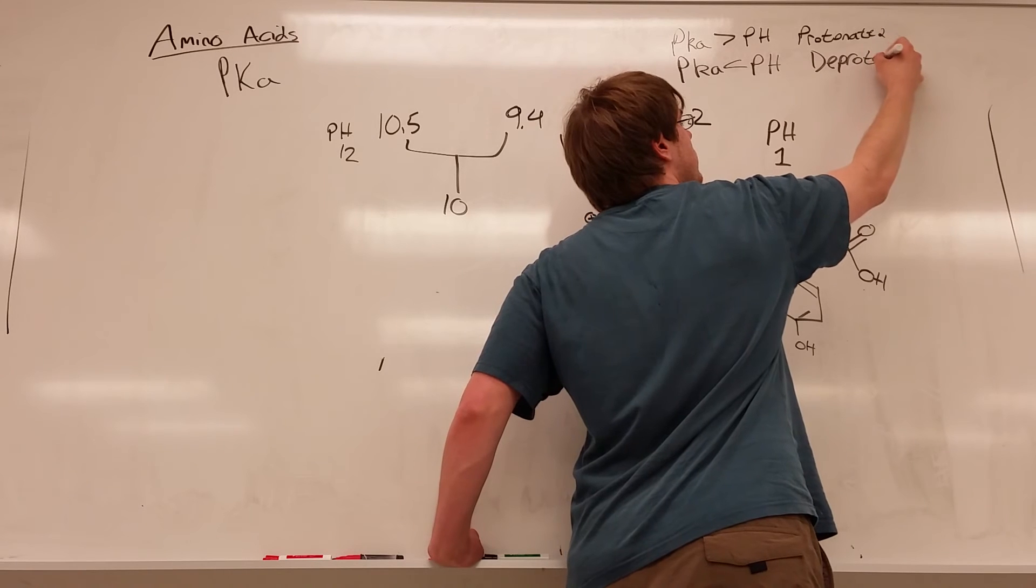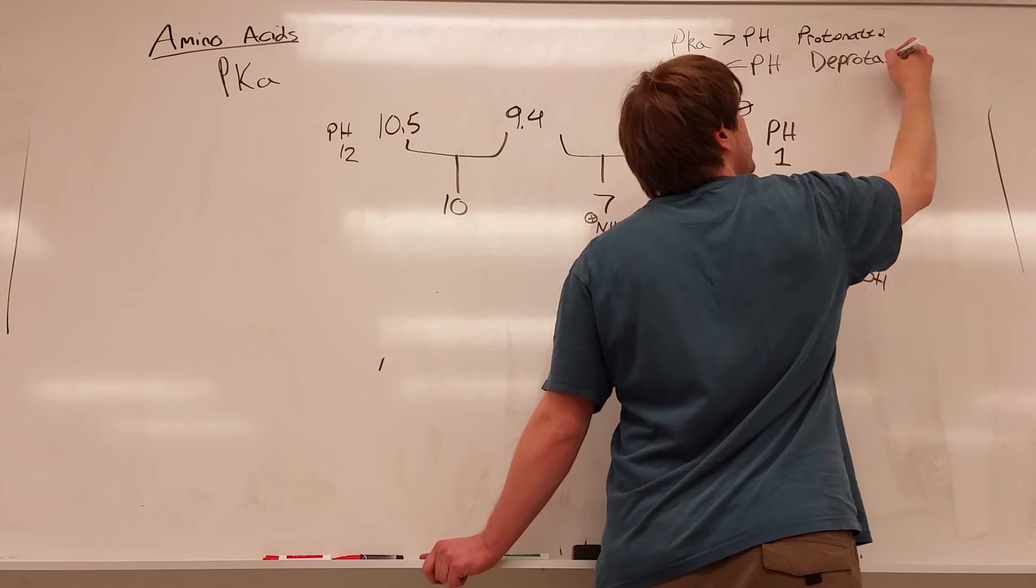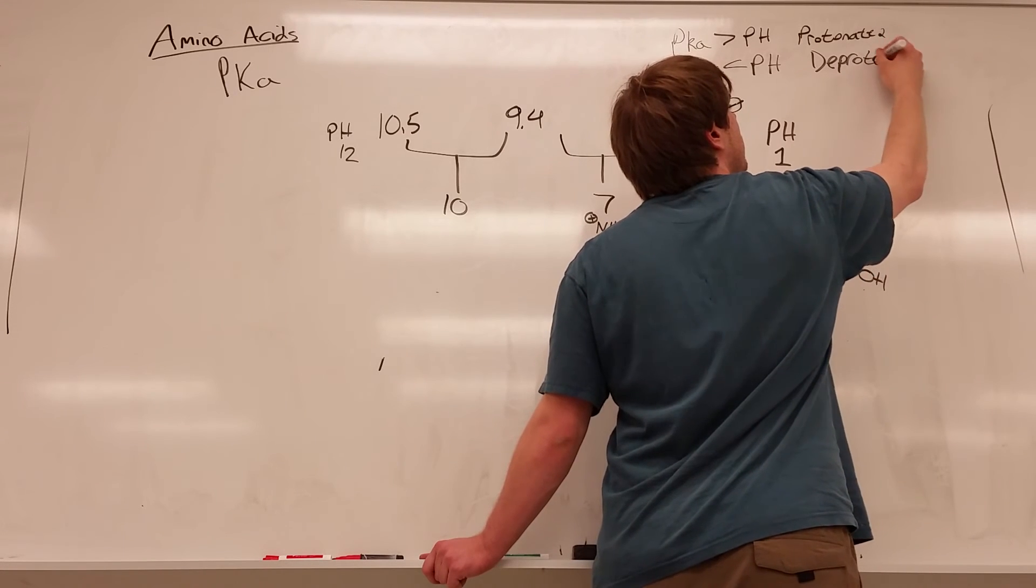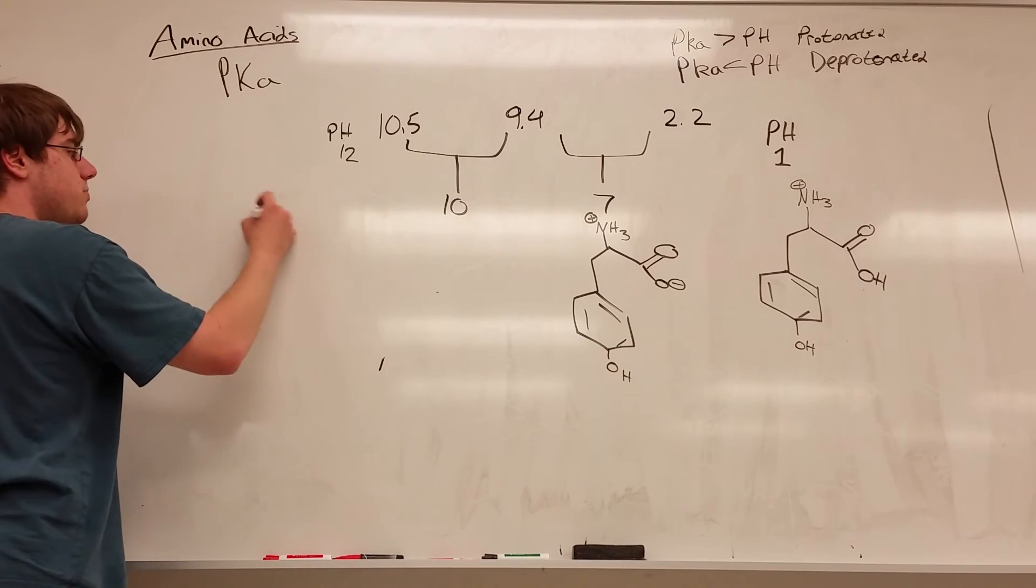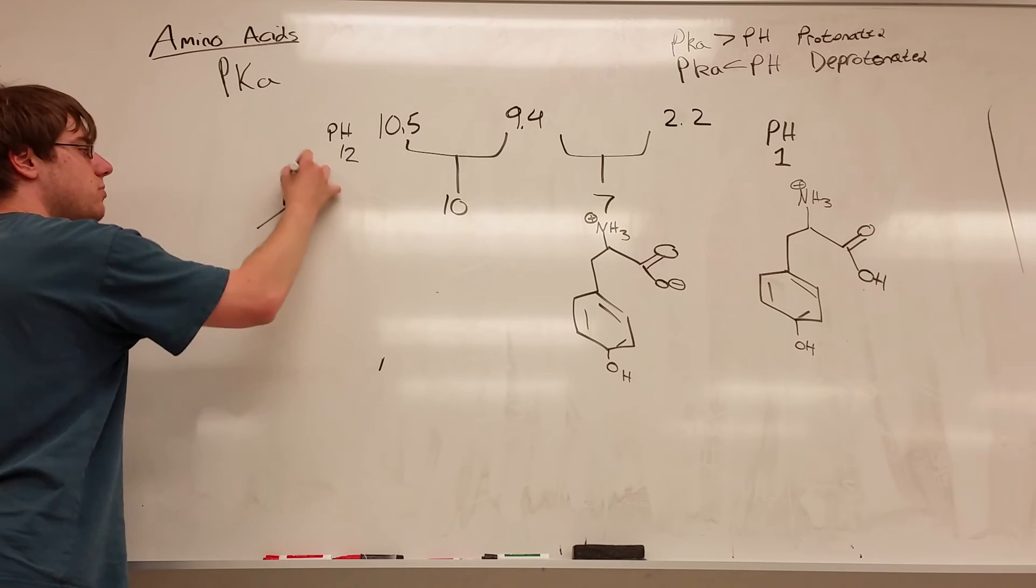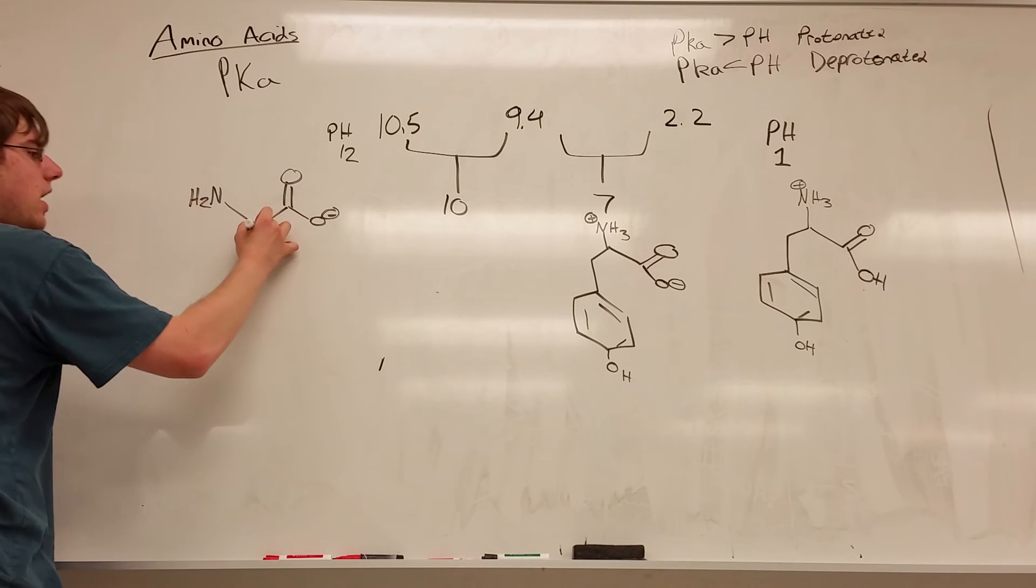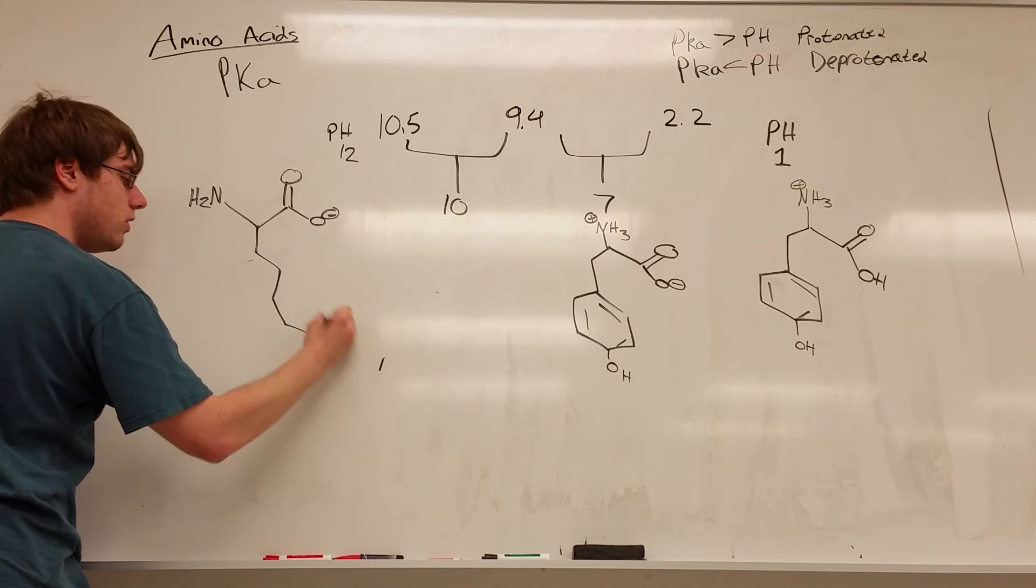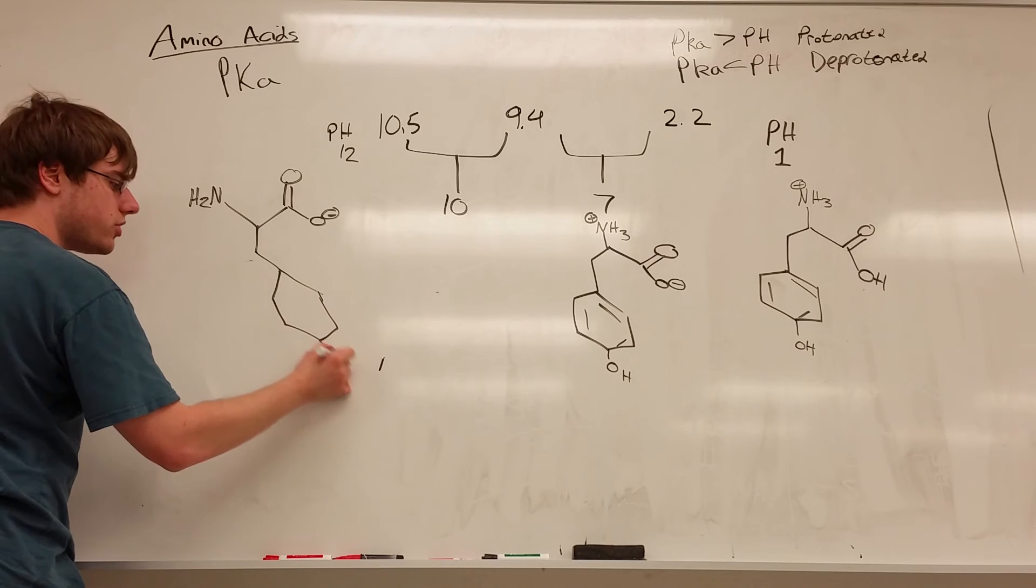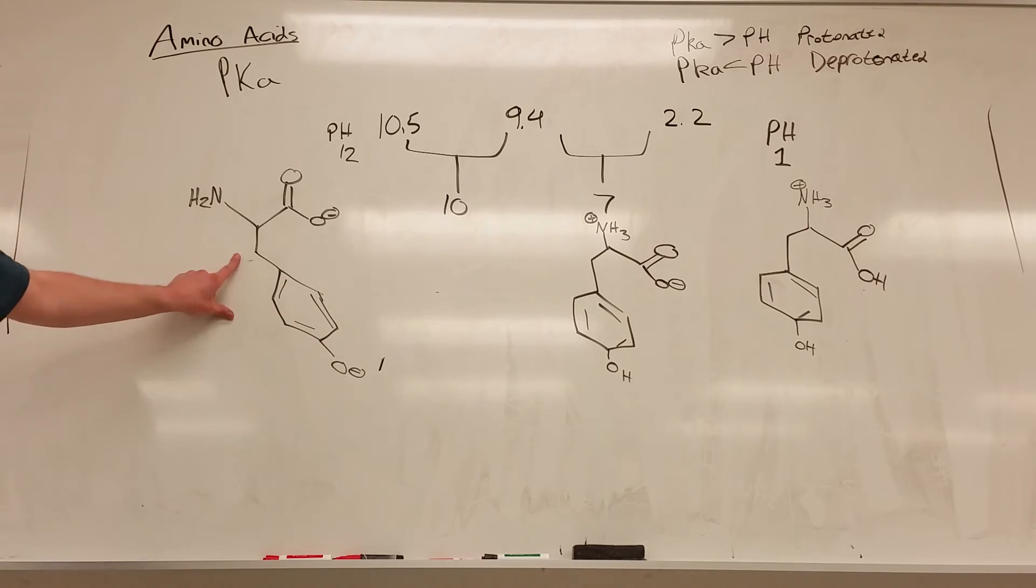Which again makes sense. If you're in a solution that is super basic, then you should be ripping off protons from everywhere you can. Which means when I draw out that tyrosine, everything is going to be deprotonated. So I have the carboxylic acid being O-, I have the nitrogen being NH2, and I have the side chain, the side chain will also be deprotonated in this version, so O-. So this is what it would look like at the highest possible pH, because every single thing will be deprotonated.